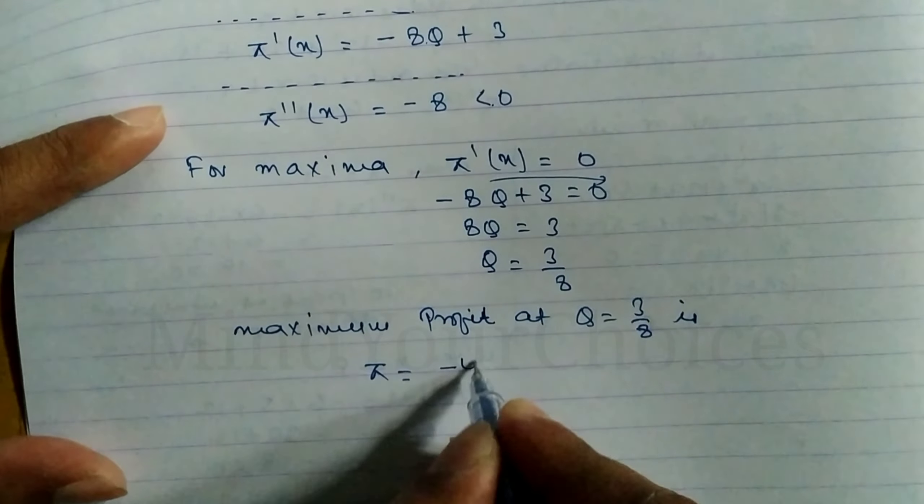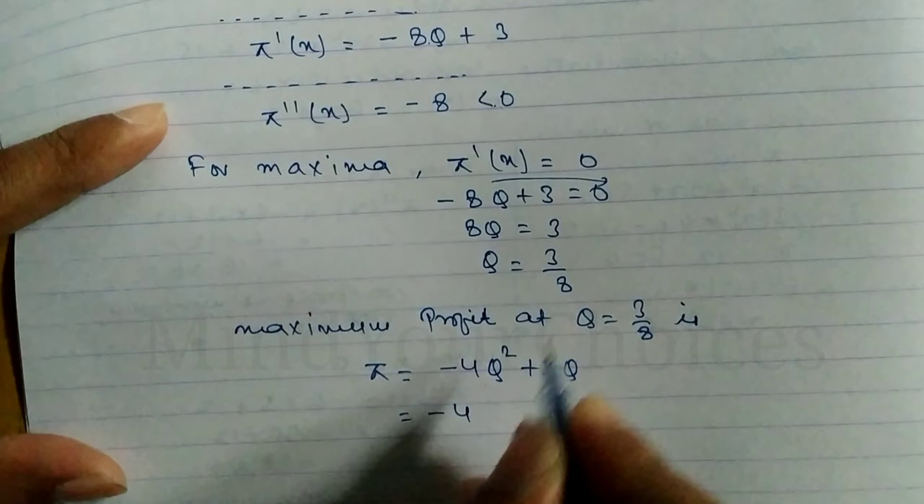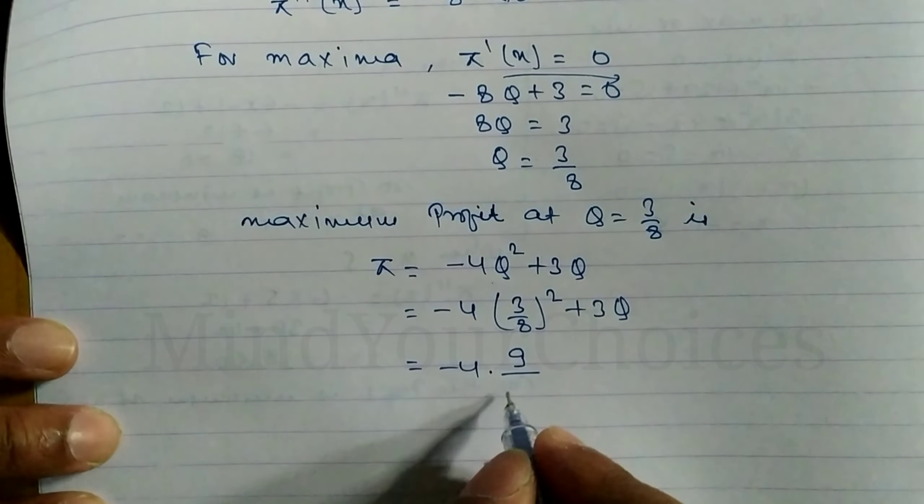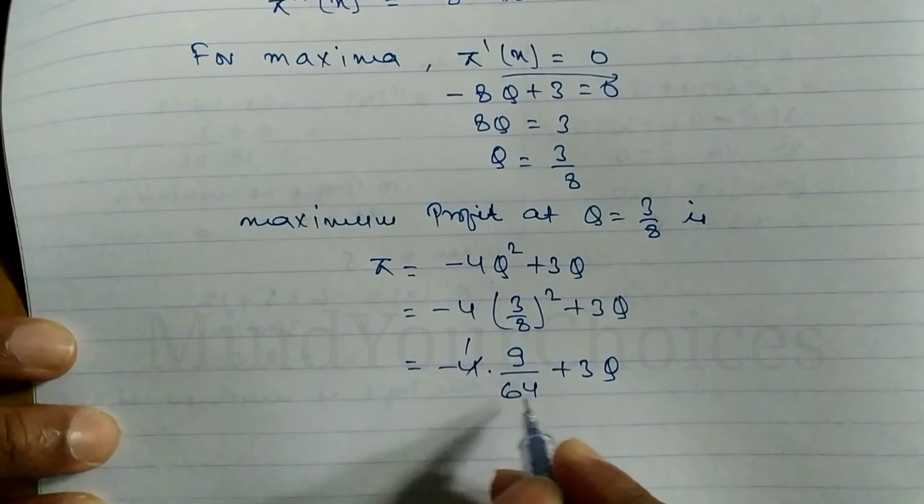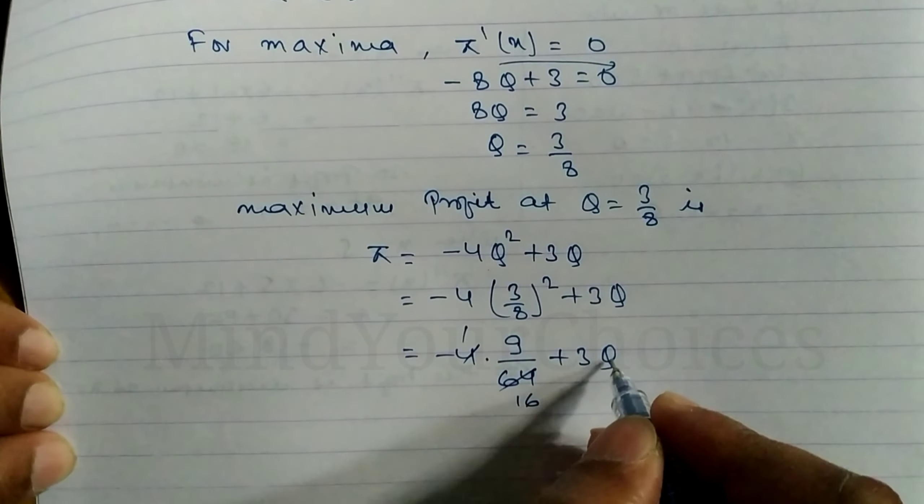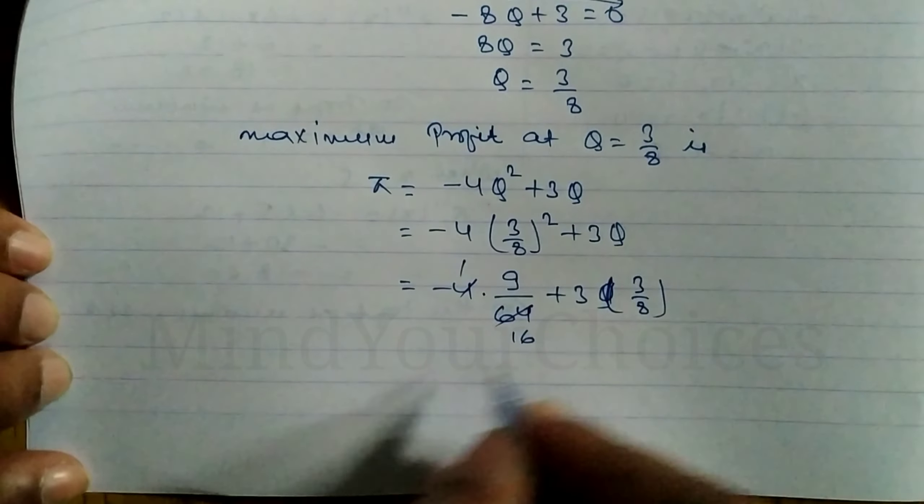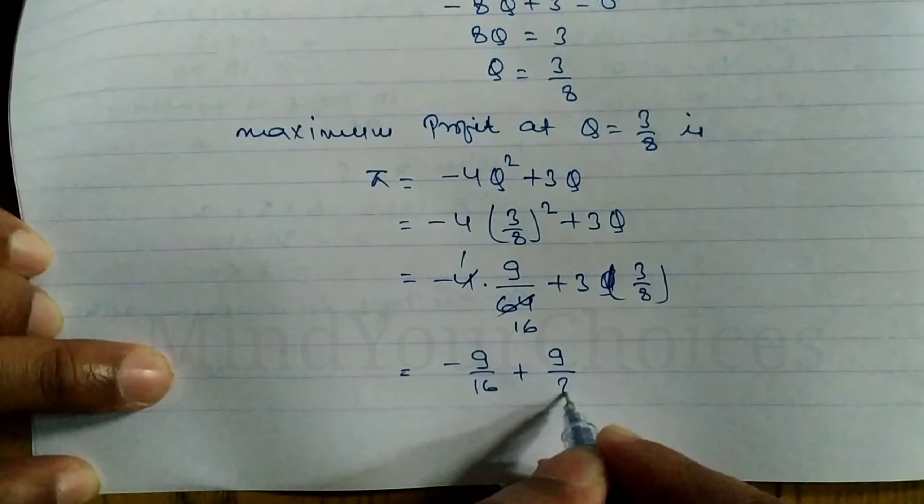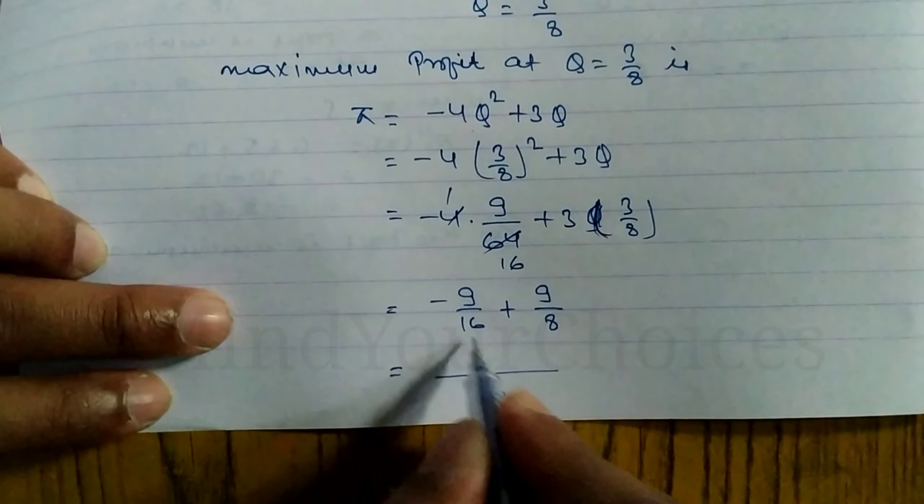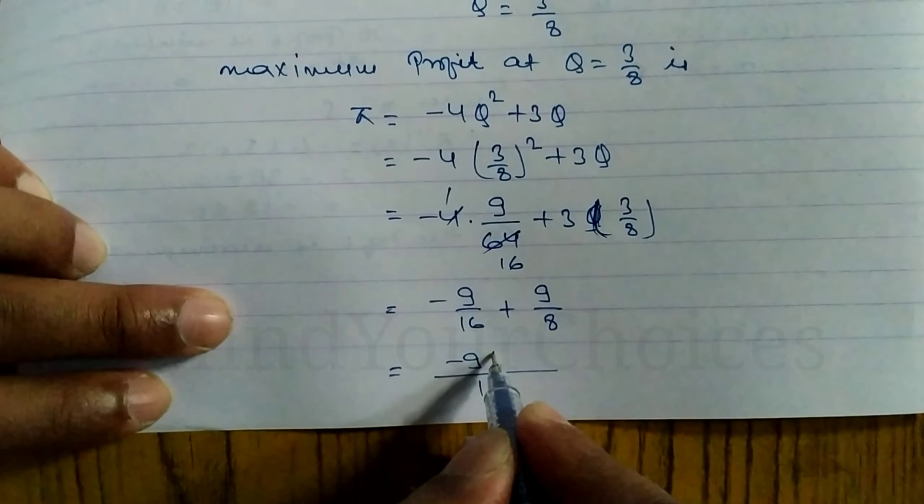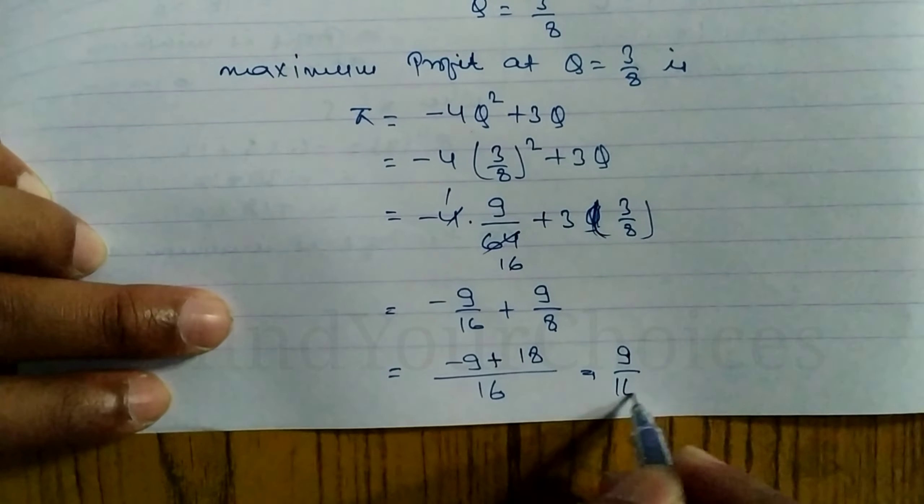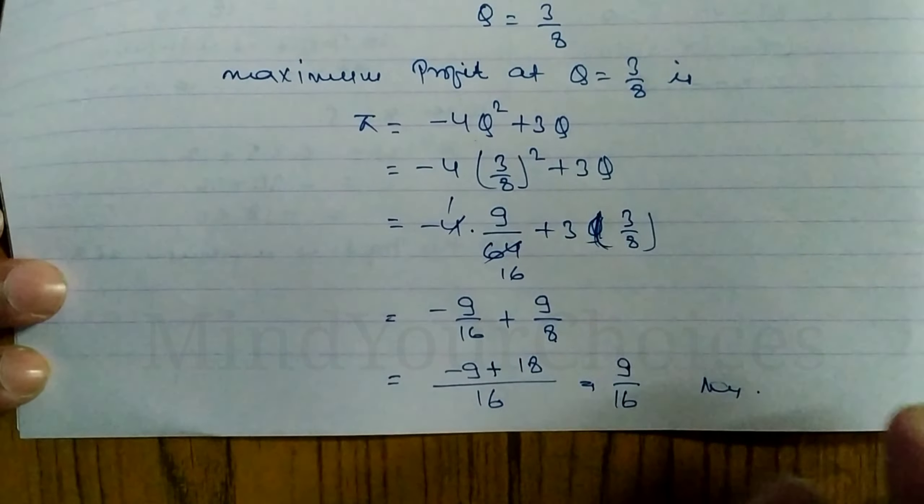So profit equals minus 4Q square plus 3Q. When Q is 3 by 8, minus 4 times 3 by 8 whole square plus 3 times 3 by 8. That's minus 4 times 9 by 64 plus 9 by 8. Minus 9 by 16 plus 9 by 8. Taking LCM, the LCM is 16. Minus 9 plus 2 times 9 equals 18. 18 minus 9 by 16 equals 9 by 16. This is the maximum profit value.